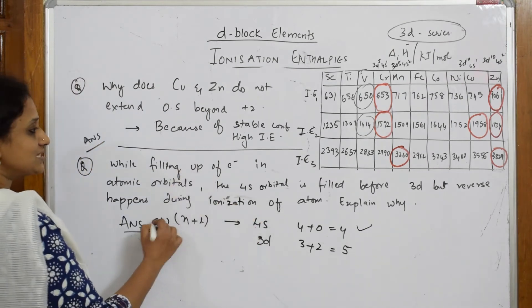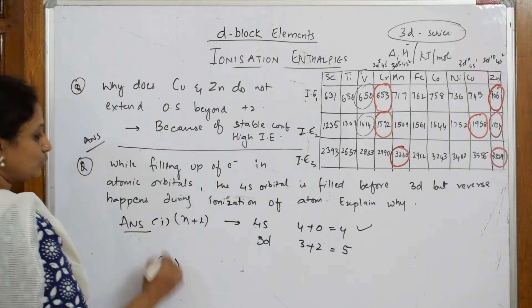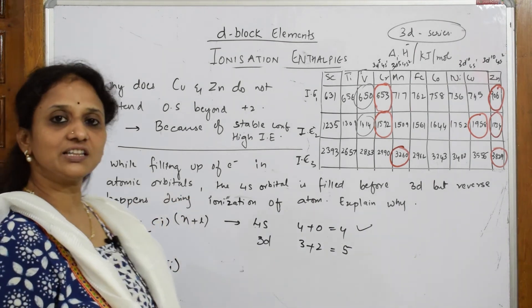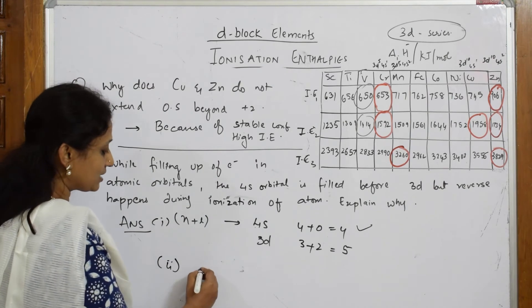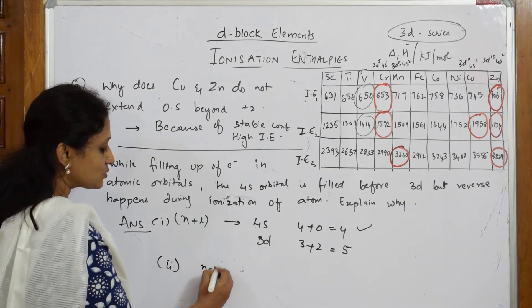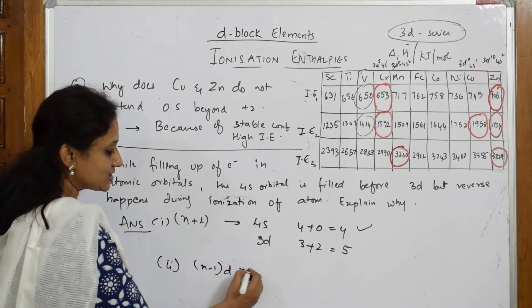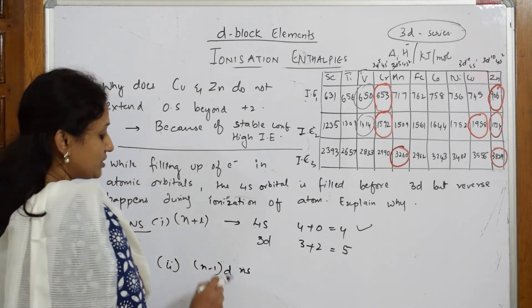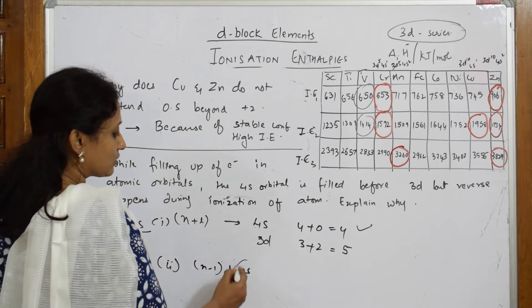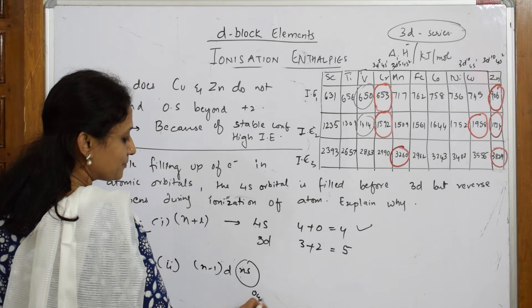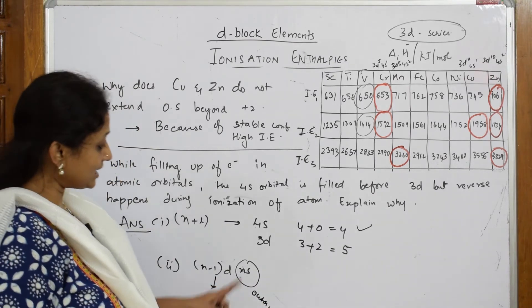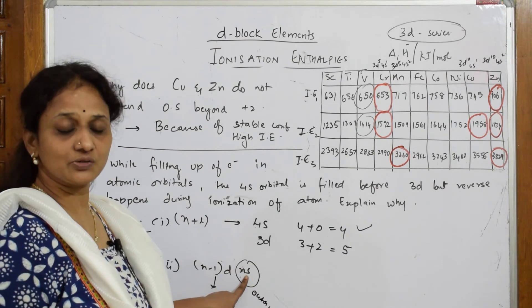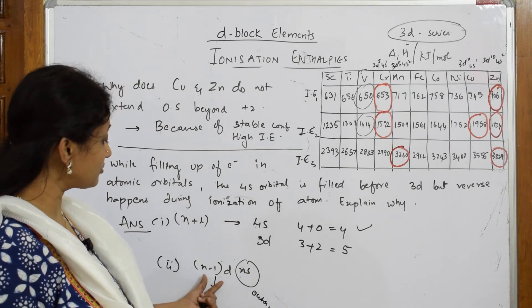Now for the second one, when I have to take out or use ionization enthalpy to remove an electron, what happens when I compare n minus 1 d and ns? Which is easier when I have to remove electron? This is outermost shell and this is your inner shell. I can easily remove electron from this using less energy, but removing electron from the penultimate shell will become difficult.